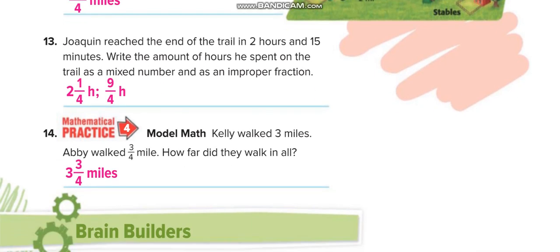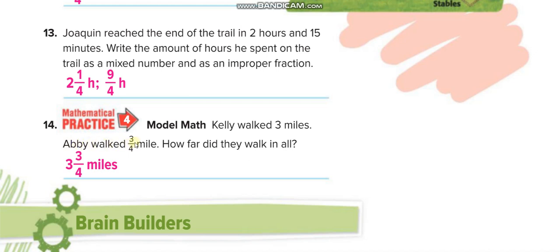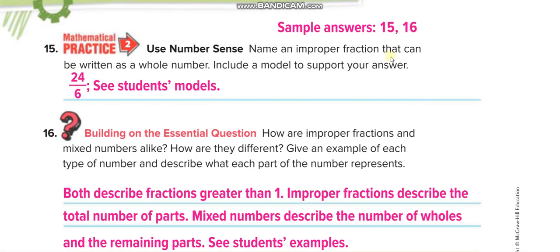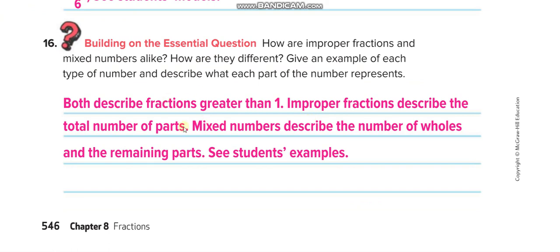Kelly walked 3 and 3/4 miles total — write that as an improper fraction: 3 and 3/4 together. The last question asks you to name an improper fraction that can be written as a whole number — for example, 24/6: since 6×4=24, it equals exactly 4 with no remainder. Give another example of such a fraction in the comments.